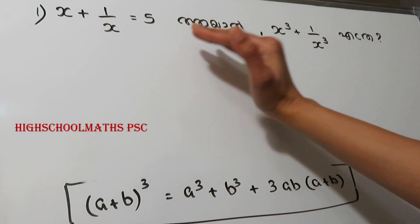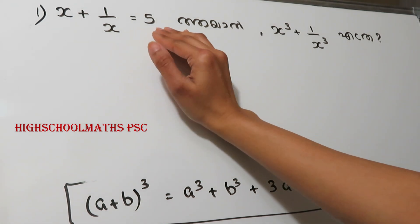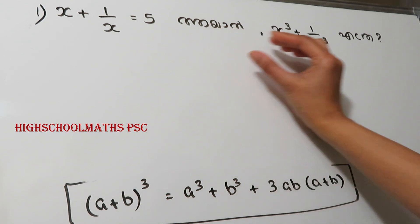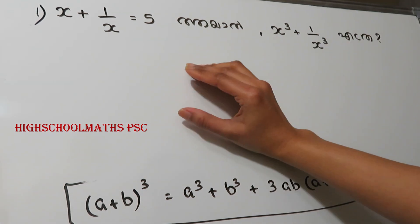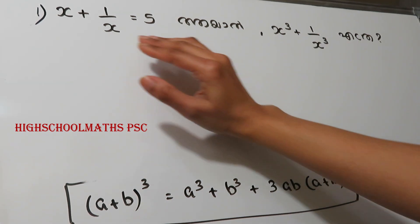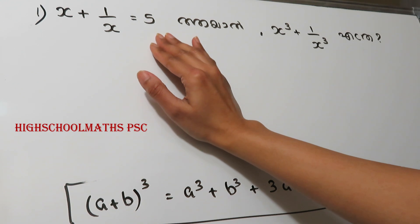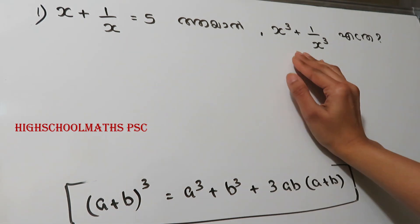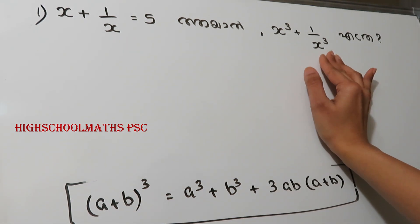Now, the first question is: x plus 1 by x is equal to 5. That is, x-cubed plus 1 by x-cubed. If x plus 1 by x is equal to 5, then find the value of x-cubed plus 1 by x-cubed.